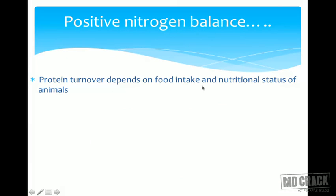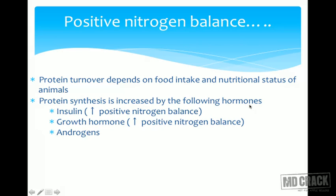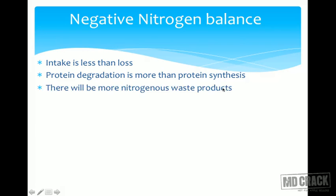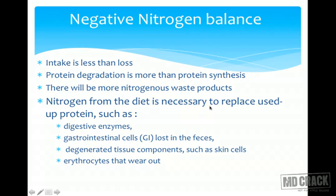Protein turnover depends on food intake and nutritional status. Protein synthesis is increased by insulin, growth hormone, and androgens — all promoting positive nitrogen balance. In negative nitrogen balance, intake is less than loss and protein degradation exceeds synthesis, resulting in net protein loss. There are more nitrogenous waste products, and nitrogen from the diet is necessary to replace digestive enzymes, GI cells lost in feces, degenerated tissue components such as skin cells, and erythrocytes.